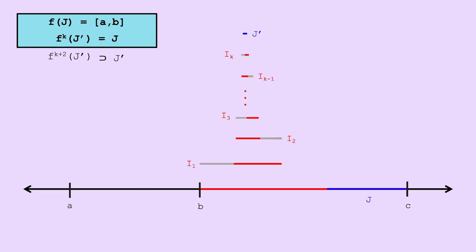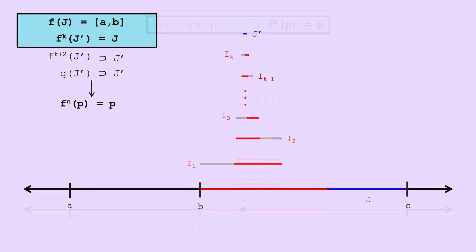By our third corollary, if g of j prime contains j prime, there must be a point p in j prime, such that g of p is equal to p. In this case, g is just f to the k plus 2, which means there's a point p, such that f to the k plus 2 of p is equal to p. Then we'll just let n equal k plus 2. We know p has period exactly n, because by construction, once every exactly n iterations it enters ab, so it cannot have a smaller period.